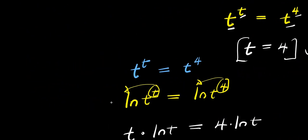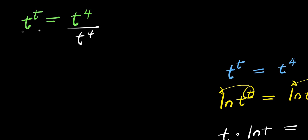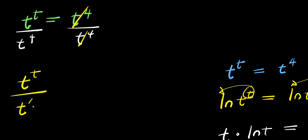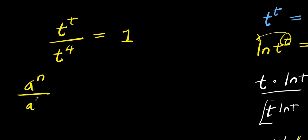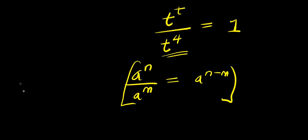Now let's solve this using a different method to confirm both solutions. We have t to the power of t equals t to the power of 4. I'll divide both sides by t to the power of 4. Using the identity a to the power of n divided by a to the power of n equals a to the power of n minus n, we get t to the power of (t minus 4) equals 1.